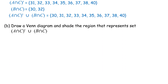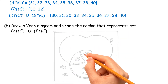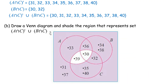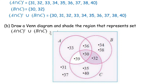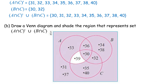Part B: Draw a Venn diagram and shade the region that represents complement of (A intersect C) union (B intersect C). Shade the region for complement of (A intersect C). Shade the region for (B intersect C). The complement set of (A intersect C) union (B intersect C) refers to all the regions covered by both complement of (A intersect C) and (B intersect C).